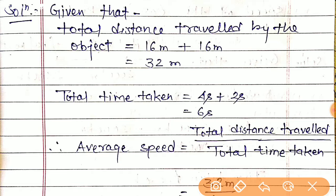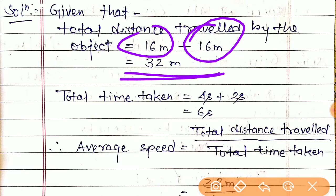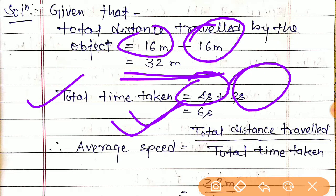Total distance equals 16 meters plus 16 meters, which is 32 meters. Total time equals 4 seconds plus 2 seconds, which is 6 seconds. So we have 32 meters total distance and 6 seconds total time.